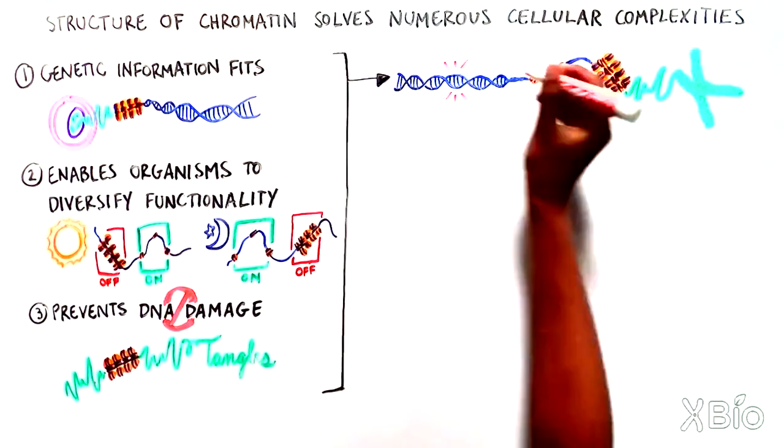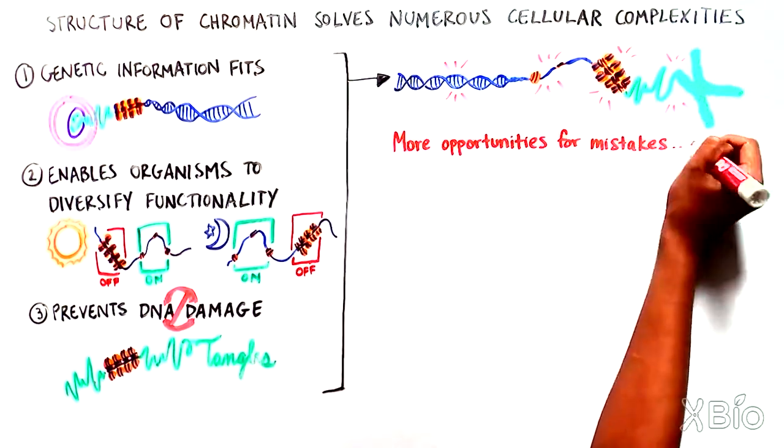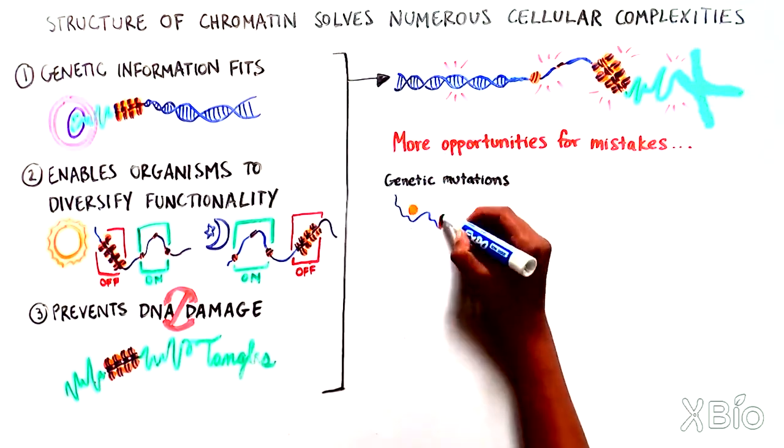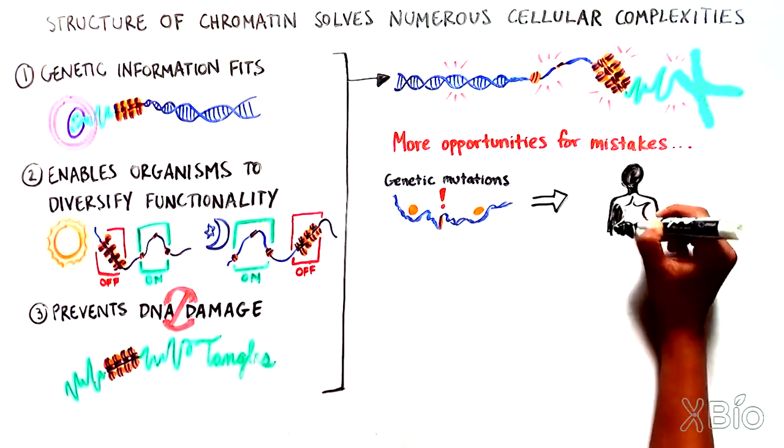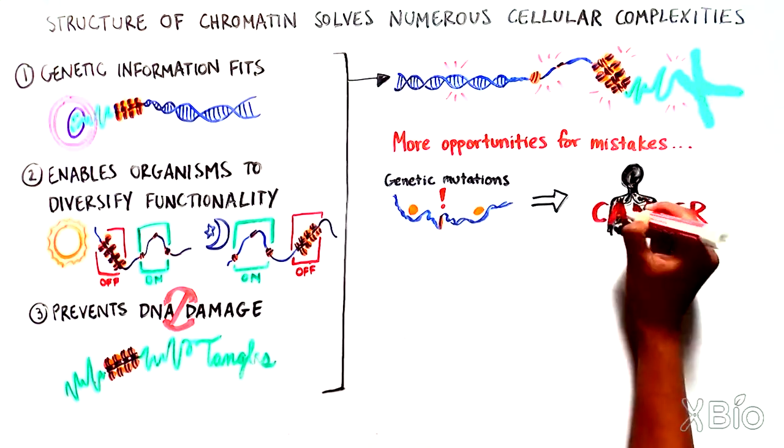More levels of biological intricacy, however, also means more opportunities for mistakes to happen. Researchers are finding that genetic mutations affecting chromatin structure are common in many types of diseases, especially cancer.